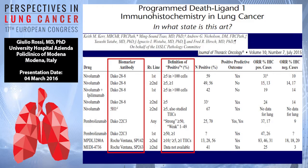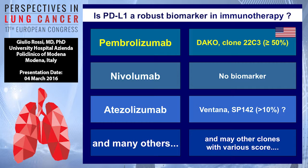Another problem is PD-L1. It's complex because we have several clones, several scoring systems, and several platforms — very confusing. There is just one companion diagnostic approved by the FDA: pembrolizumab uses the DAKO clone 22C3. There is another DAKO clone 28-8 that does not seem to give useful information. So it's very difficult to apply PD-L1 immunostaining in our routine practice algorithm.